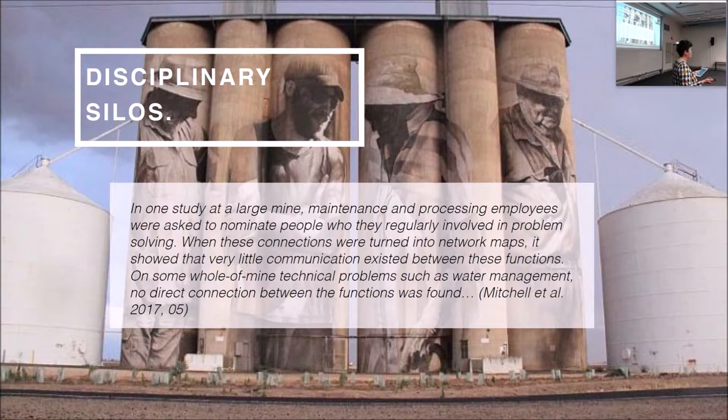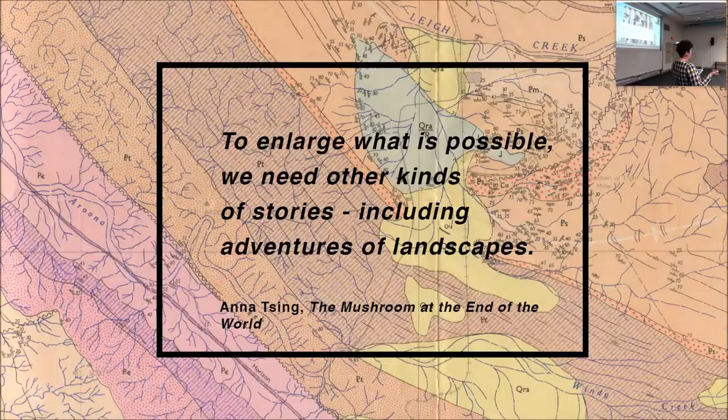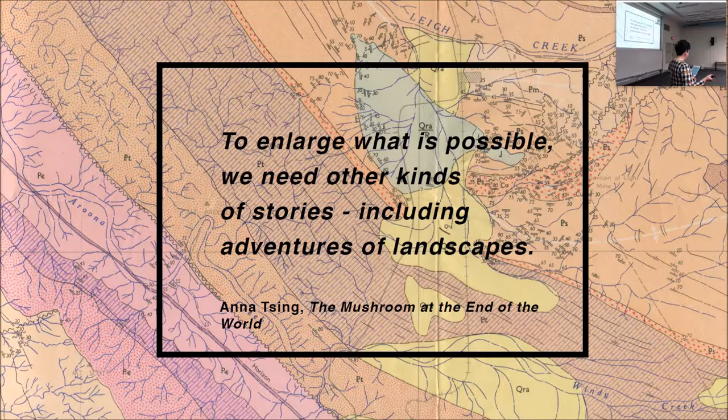This issue with disciplinary silos is not novel, and of course there's work being done with SMI, specifically through the Complex All-Bodies Program, to track some of its boundaries. I'm guided in my research by the directive given by Anna Tsing in her brilliant book The Mushroom at the End of the World, where she says: 'To enlarge what is possible, we need other kinds of stories, including inventions of landscapes.' In order to meet this agenda, it's increasingly clear that crossing disciplinary and knowledge boundaries, and acknowledging the process of knowledge creation, are the keys to understanding landscape change more comprehensively.